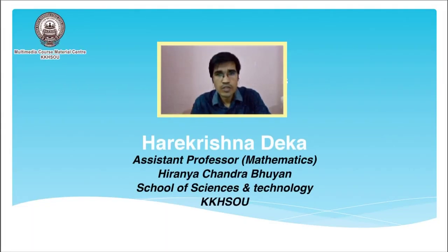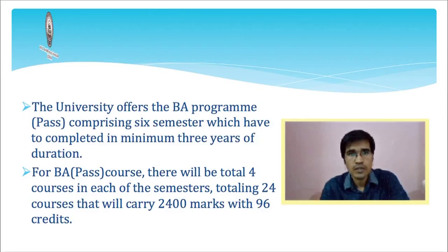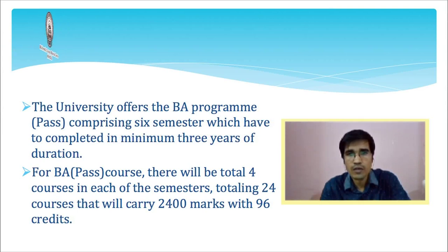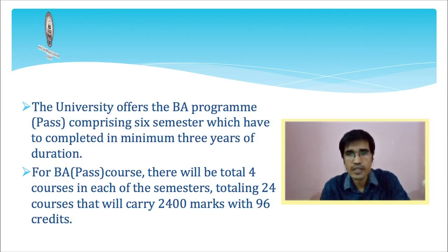Hello everyone, welcome to this introductory video on BA in Mathematics Pass Course. The university offers a BA program pass course comprising 6 semesters, which have to be completed in 3 years. For BA pass course, there will be a total of 4 courses in each semester, totaling 24 courses that will carry 2400 marks with 26 credits.